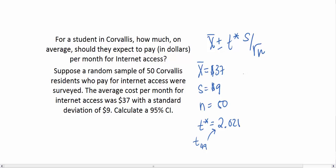And now all we have to do is put it all together. So we have $37 plus or minus a T critical value of 2.021 times a sample standard deviation of $9 all over the square root of our sample size 50.